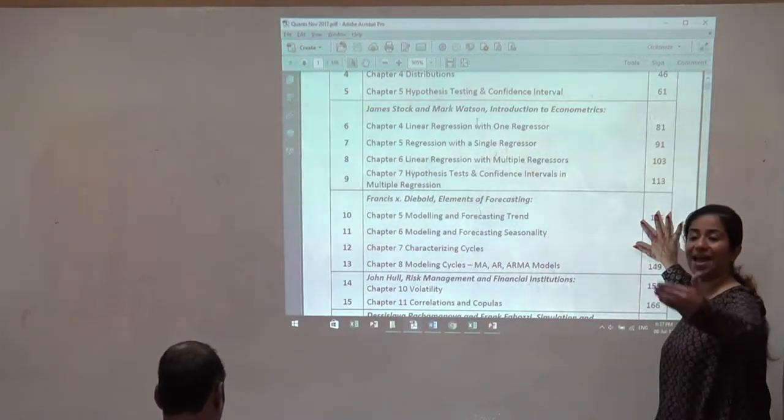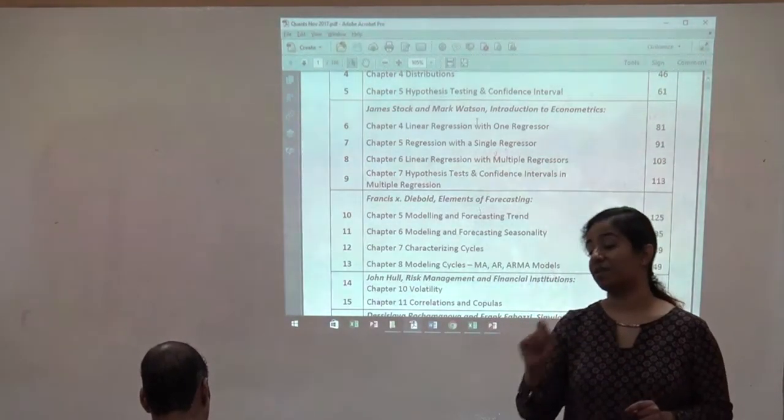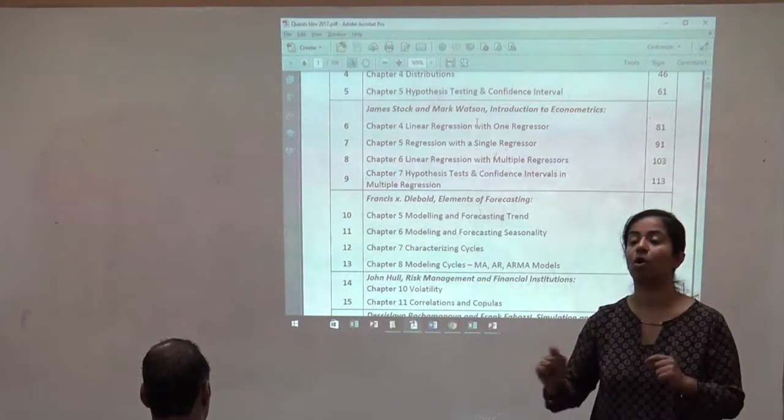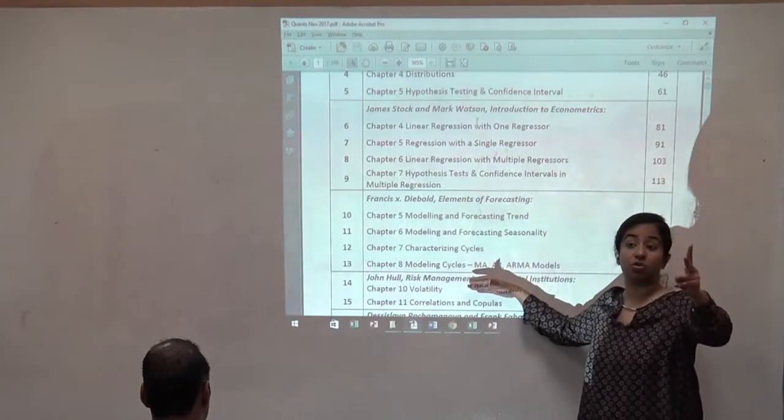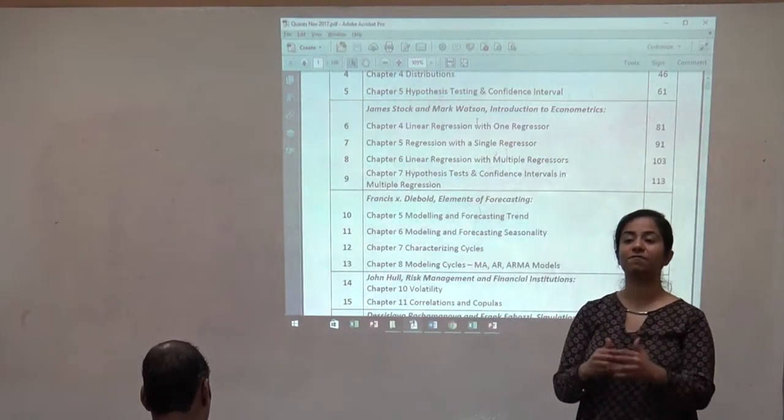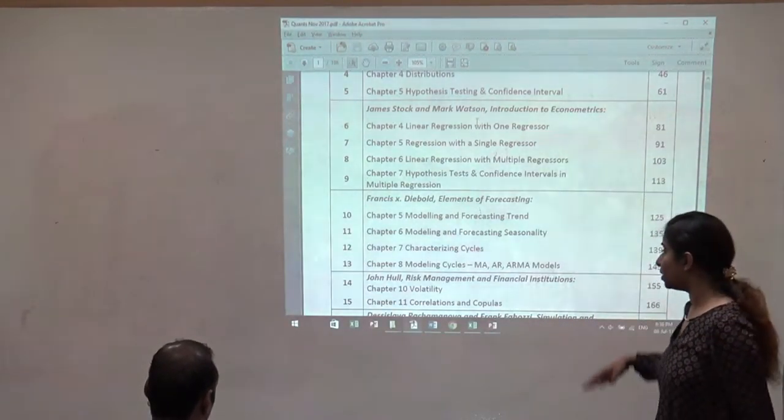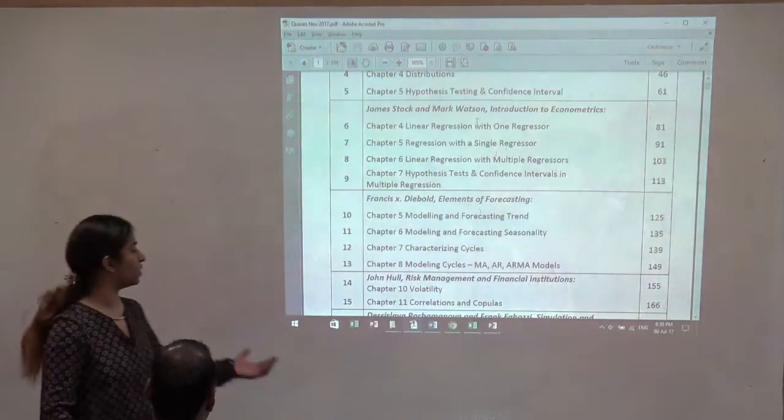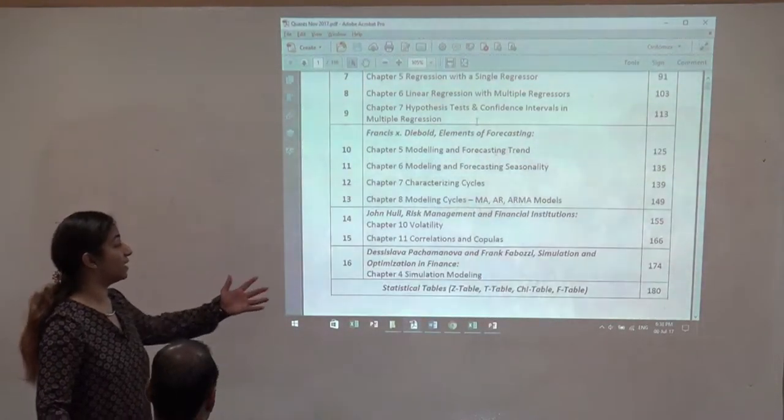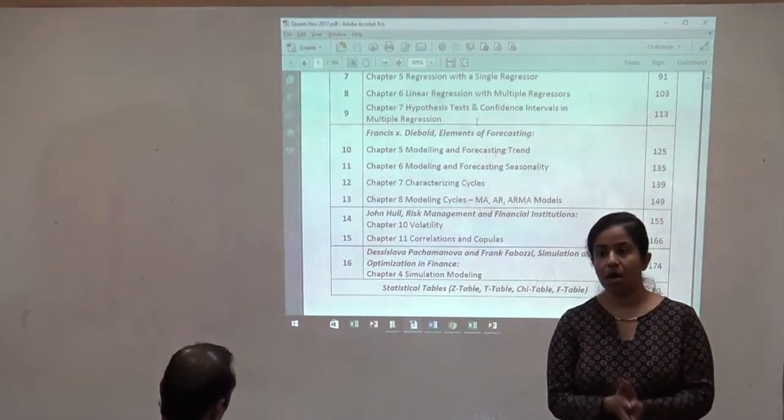To make matters worse, the pain even further gets higher when you move to the next block, which is Francis Diebold. His name itself has Die in it. So these chapters are excruciatingly challenging. But needless to say, it's not impossible. If you understand the concepts, most of the questions from this set will be theory, which means you just need to get a broad overview rather than actually crunching numbers. So this is something we're going to earmark as challenging.